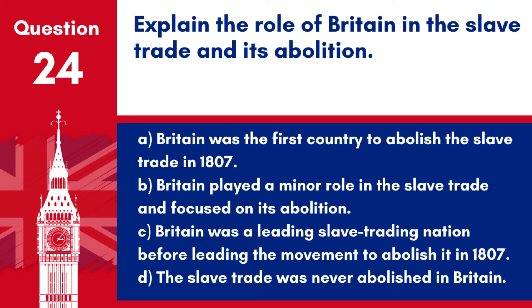Question 24. Explain the role of Britain in the slave trade and its abolition. a. Britain was the first country to abolish the slave trade in 1807. b. Britain played a minor role in the slave trade and focused on its abolition. c. Britain was a leading slave trading nation before leading the movement to abolish it in 1807. d. The slave trade was never abolished in Britain. Answer: c. Britain played a significant role in the transatlantic slave trade before becoming a leader in the abolition movement.